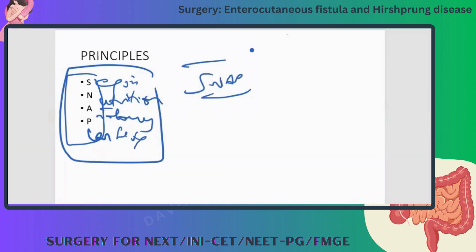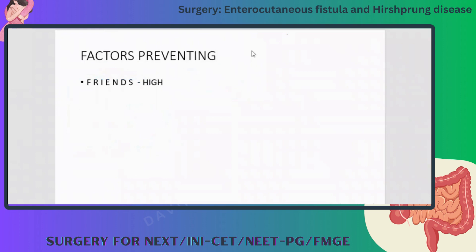Anatomical assessment — do a CT and find out where the anatomy is and how the fistula is lying. Then P is plan for surgery. These are the SNAP principles.